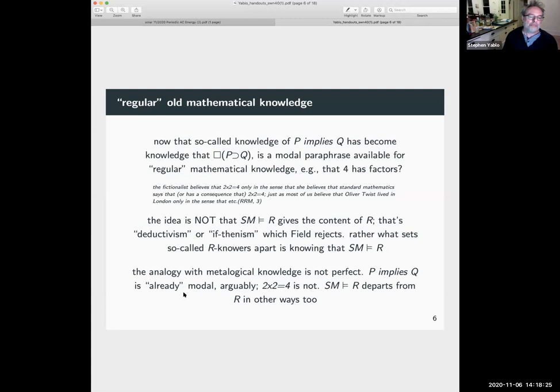And here's what Hargree says: the fictionalist believes that two times two equals four, only in the sense that she believes that standard mathematics says that or has as a consequence that two times two is four. Just as most of us believe that Oliver Twist lived in London, only in the sense that etc.